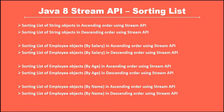Next, we'll see how to sort a list of employee objects by their salary in ascending and descending order using lambda expressions and Stream APIs. Then we'll sort employee objects by age, and also by name in ascending and descending order using Stream APIs. Let's switch to the Eclipse IDE and start developing examples to demonstrate all these use cases.